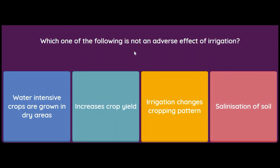Which one of the following is NOT an adverse effect of irrigation? The options include: water-intensive crops are grown in dry areas, and increased crop yield. The answer is increased crop yield, because that is a positive outcome of irrigation, not a negative one.